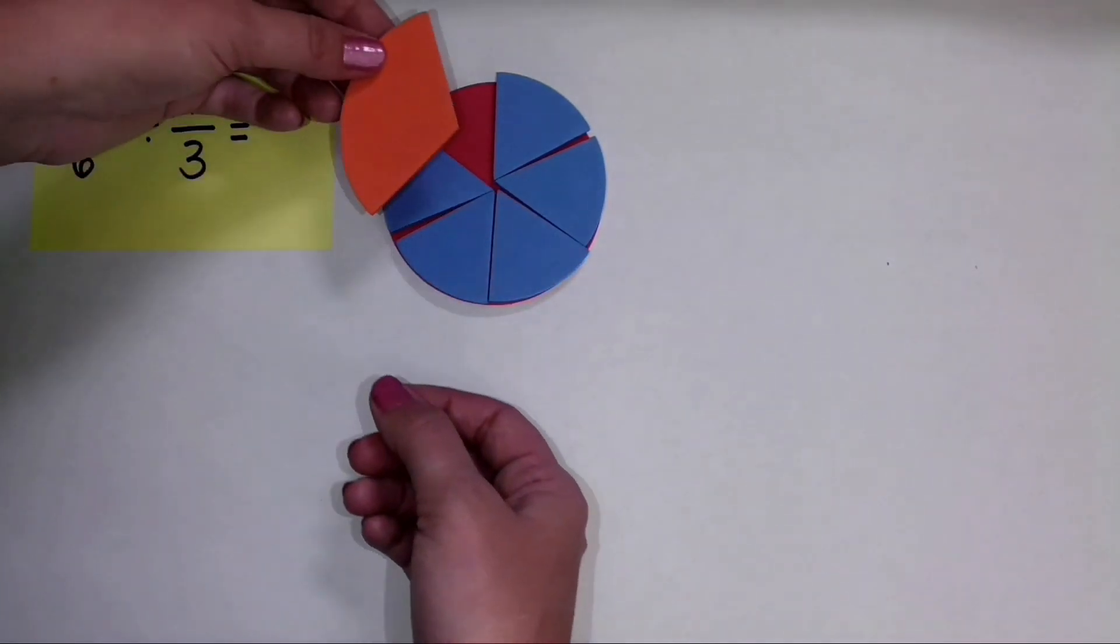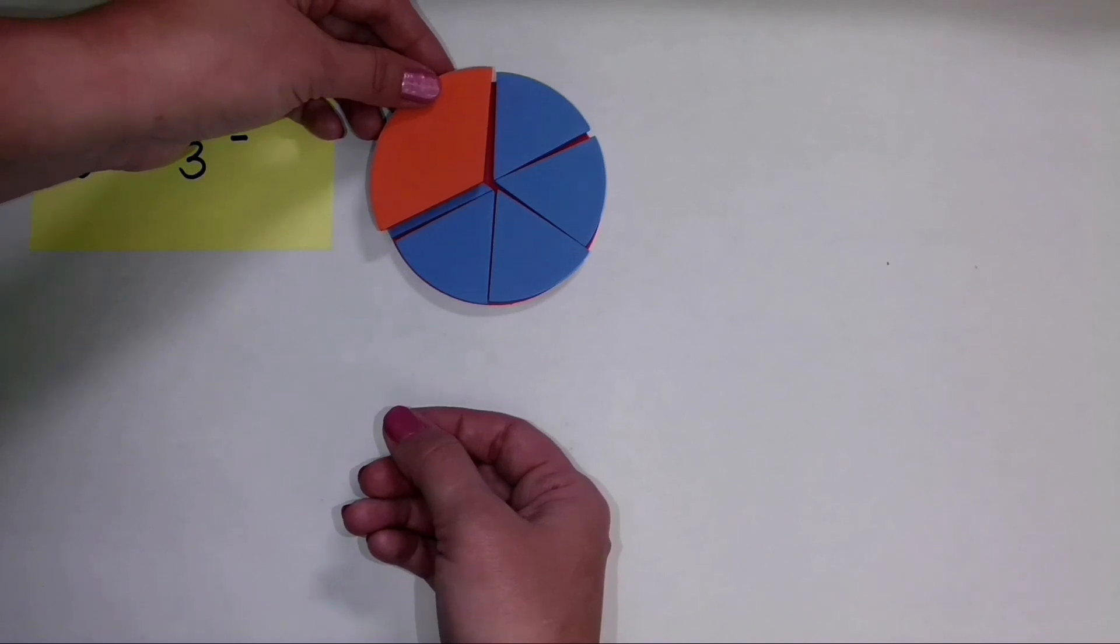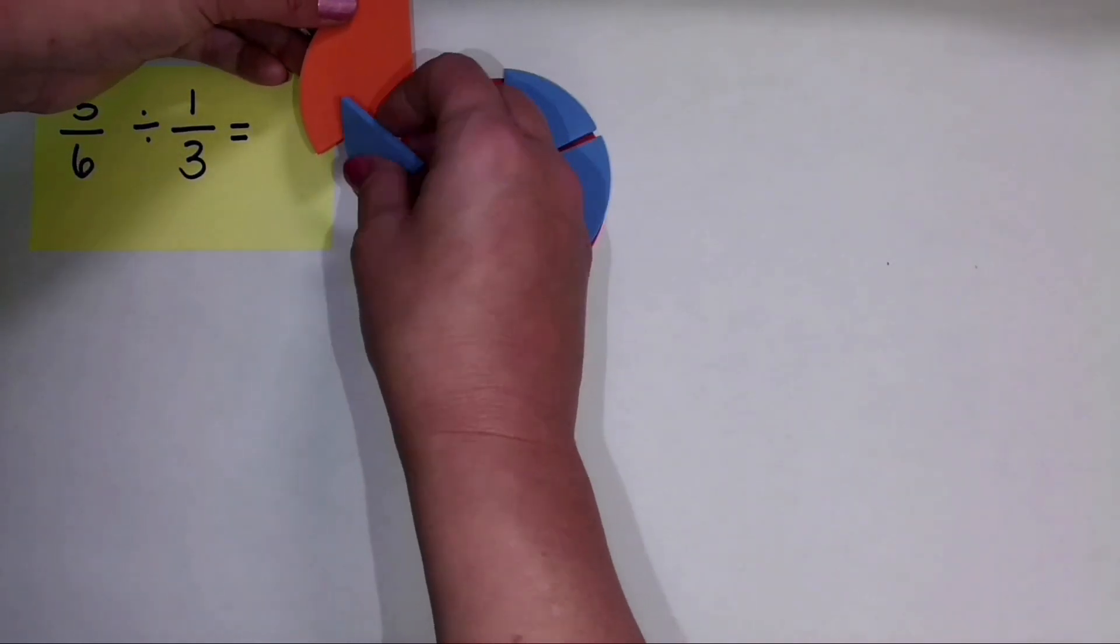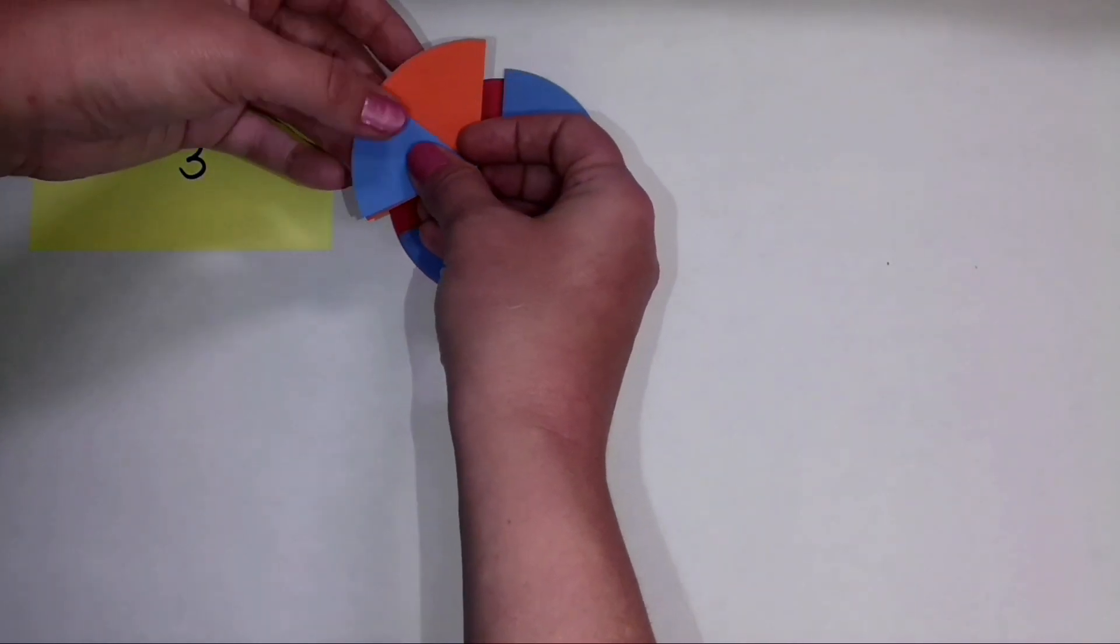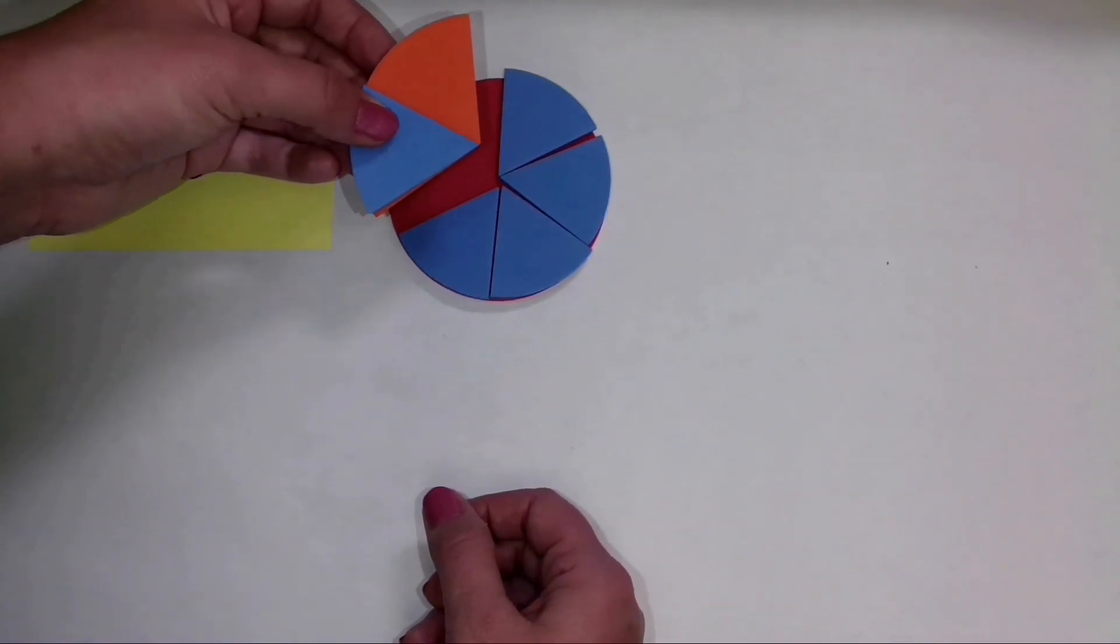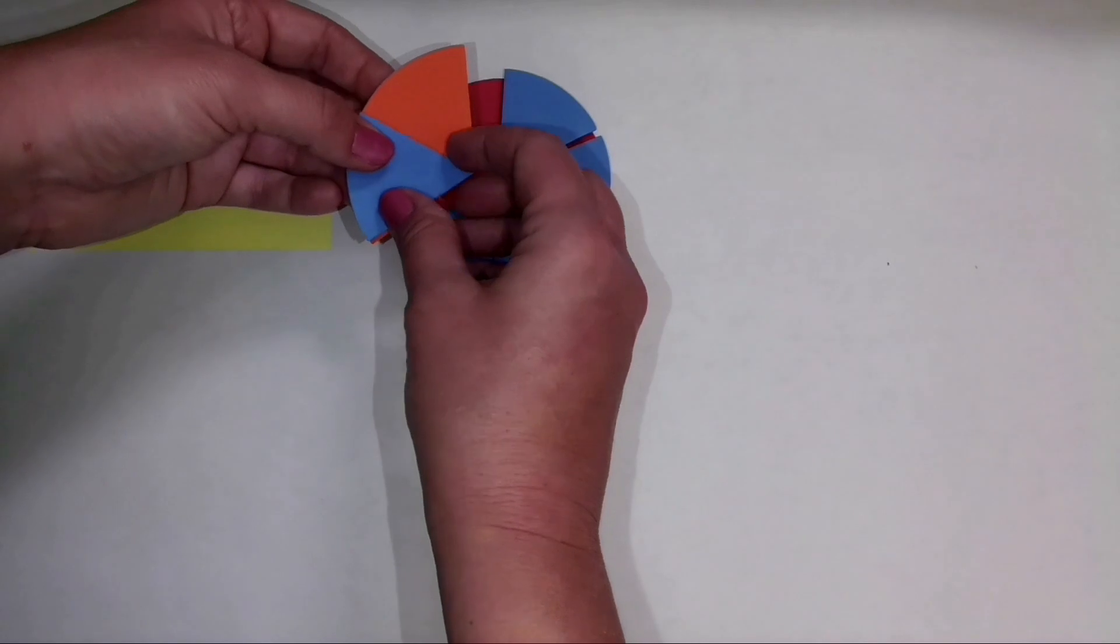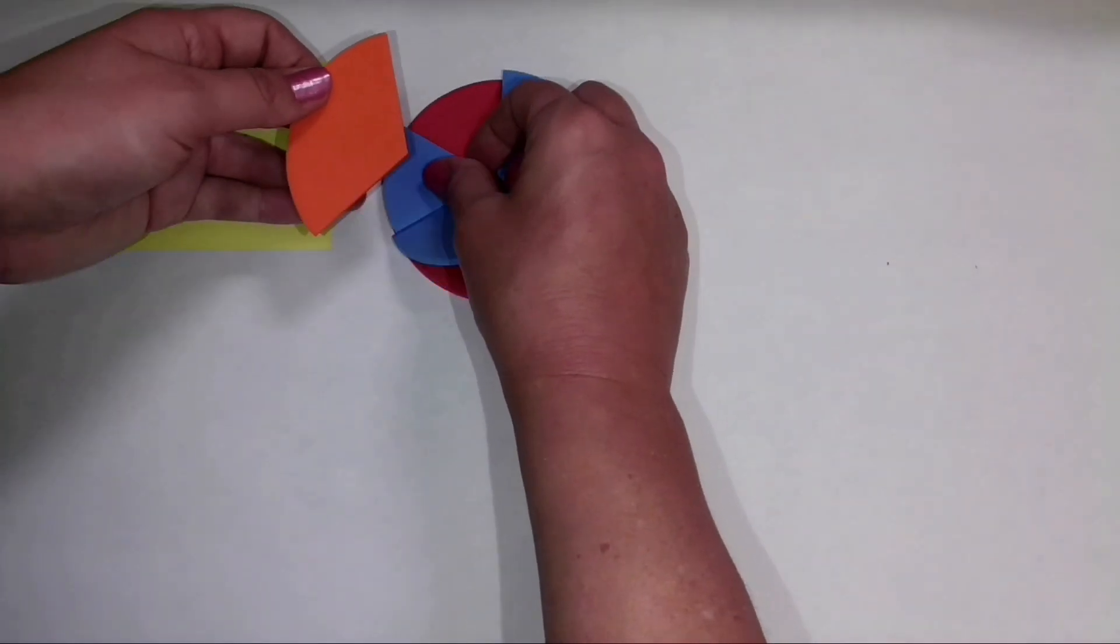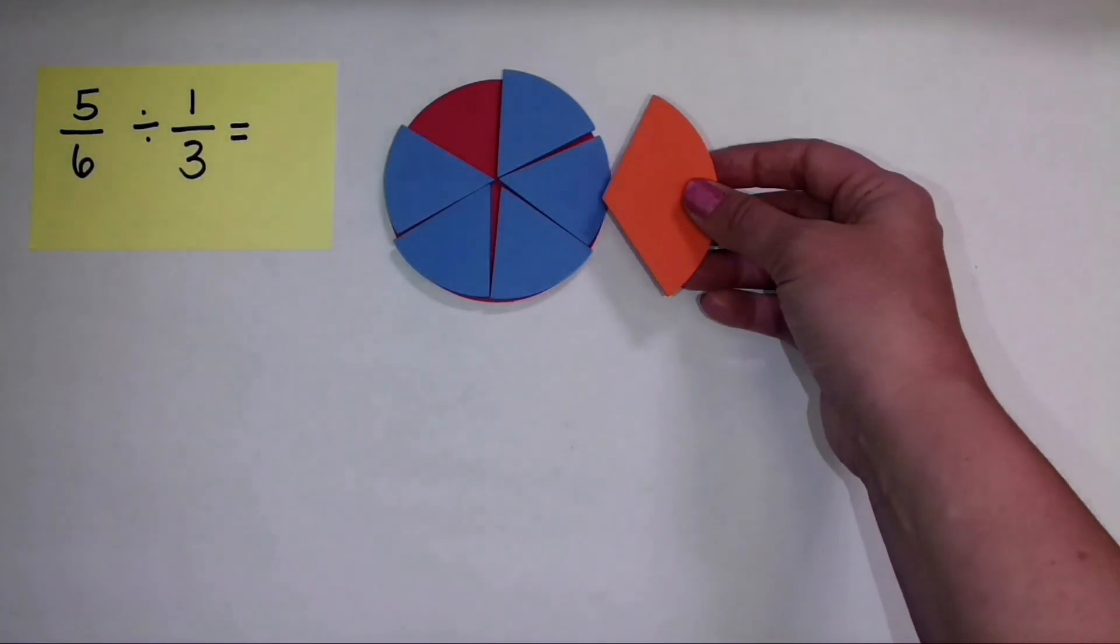Notice how it's covering both of those five-sixths pieces. I can make a second full piece. And then we get up here. I can't fill this entire one-third piece, but I'll actually place this on top to kind of show. I can show one half or fill one half of that one-third piece with my final one-sixth piece.